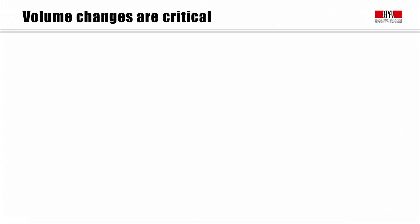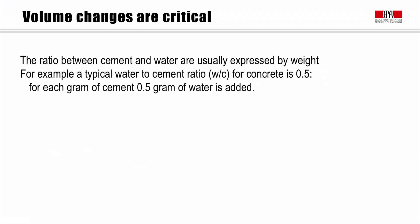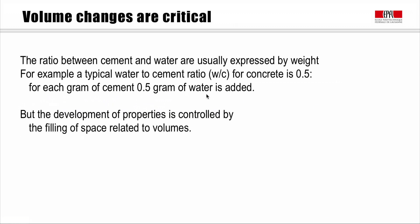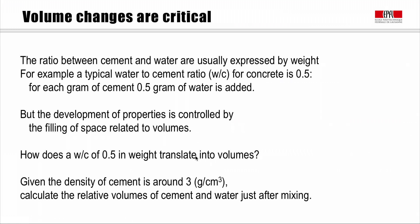As I said before, it's really these volume changes that are critical. The ratio between cement and water are usually expressed by weight, but we're interested in the volume ratio. So typically, a water-to-cement ratio in weight terms would be said to be 0.5. And this means for each gram of cement present, we add 0.5 grams of water. But the development of properties is controlled by the filling of space, which is related to the volumes. So I think it's a nice little exercise if you can translate that water-to-cement ratio by weight of 0.5 into volume. And I think you can switch off the video here. You can make this calculation for yourself. I'll tell you that the relative density of the cement is around 3. I hope you know that the relative density of water is 1. And then you should be able to make a nice simple calculation to calculate the relative volumes of cement and water just after mixing.